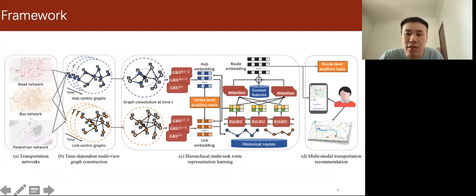The inputs are the multimodal transportation network, historical routes, and context features such as weather conditions. The output is the recommended route. Overall, there are three tasks in our method.